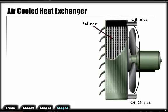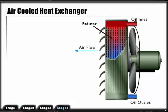Air-cooled heat exchangers consist of a steel radiator core through which oil flows while a strong blast of air passes across the core. In industrial applications, the air is pushed by an electric motor-driven fan.